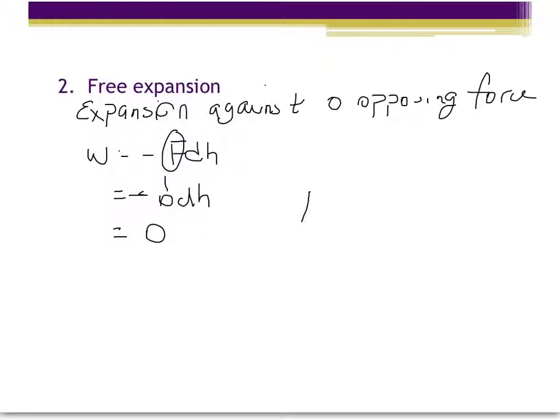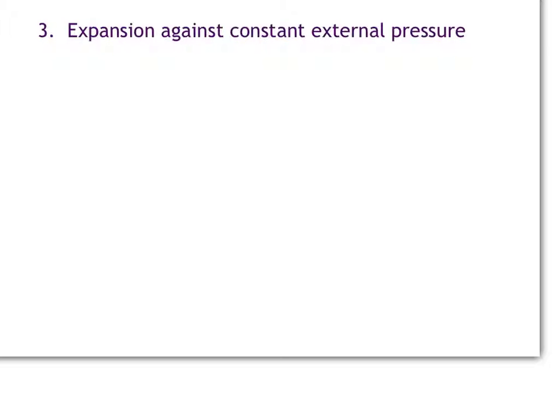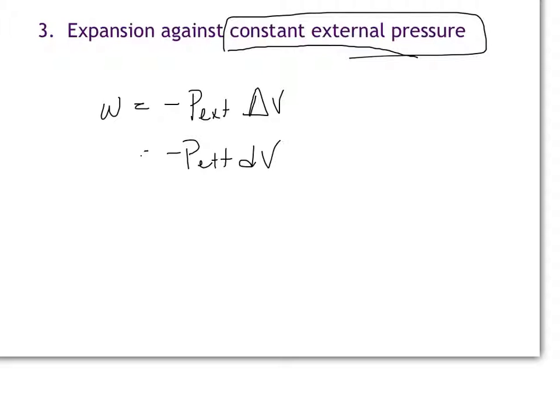So we just saw how we just derived the equation that we use for calculating the work done in an expansion against constant external pressure, and that was W is equal to negative P external times delta V, or same thing as negative P external dV. And so the time when we know that we're going to work, that we need to use this equation in a problem, is when we are told that we're talking about a scenario where we have a constant external pressure. So anytime we see constant external pressure, we'll know that this is the equation we use versus the one that I'm about to describe next.